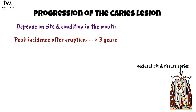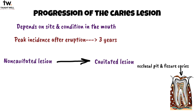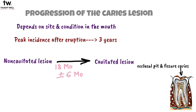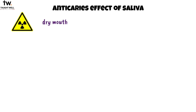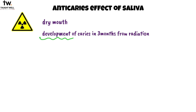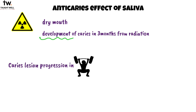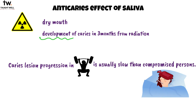Occlusal pit and fissure lesions develop in less time than smooth surface caries lesions. The time for progression from a non-cavitated to a cavitated caries lesion on smooth surfaces is estimated to be 18 months, give or take 6 months. Conditions that affect saliva can hasten caries progression; for example, radiation-induced hyposalivation can lead to caries lesions within 3 months of onset. Caries lesion progression in healthy individuals is usually slow compared with progression in compromised persons.